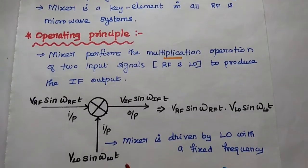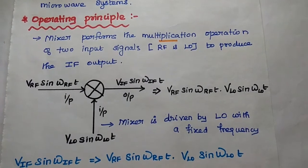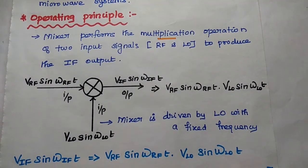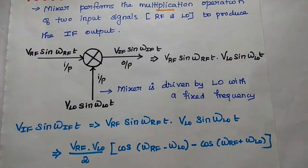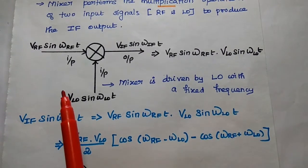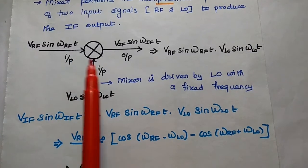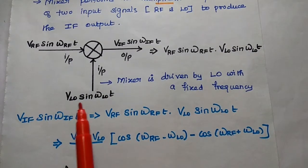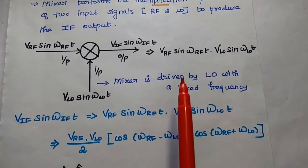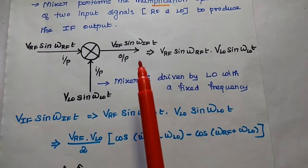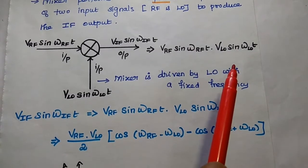Next, the operating principle of the mixer. The mixer performs the multiplication operation of two input signals to produce the intermediate frequency signal. The input RF signal can be represented as V_RF sin(ω_RF · t). The local oscillator signal is V_LO sin(ω_LO · t). These two are multiplied and the output is given as V_RF sin(ω_RF · t) multiplied by V_LO sin(ω_LO · t).